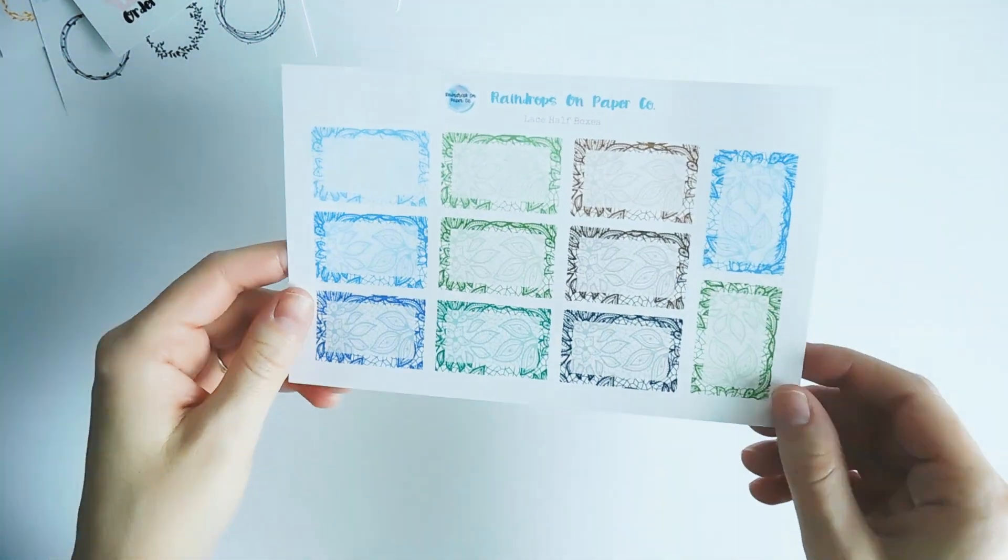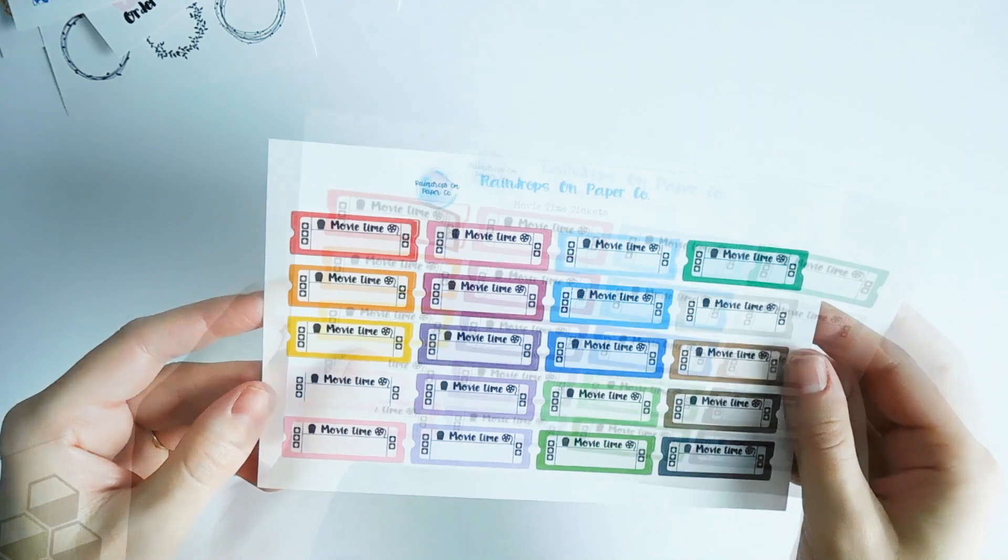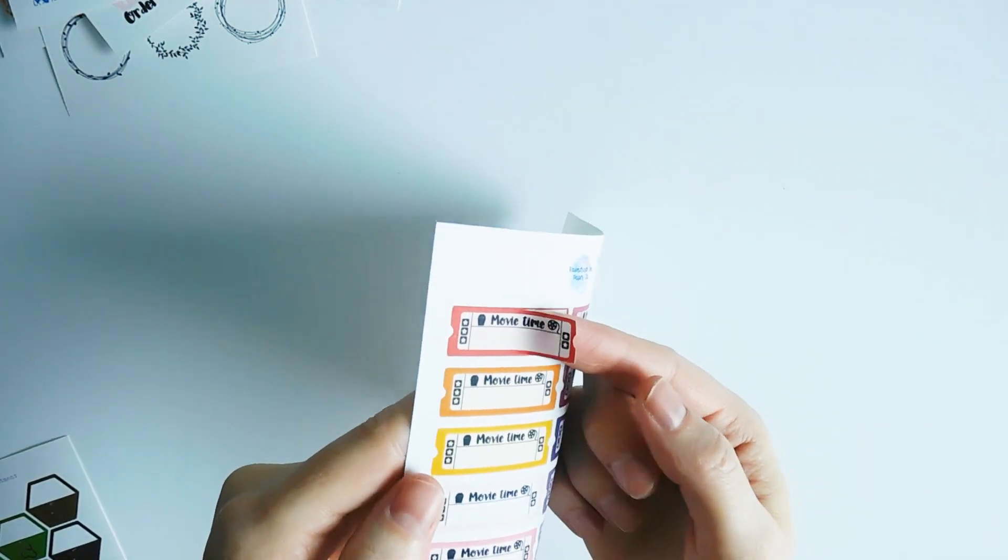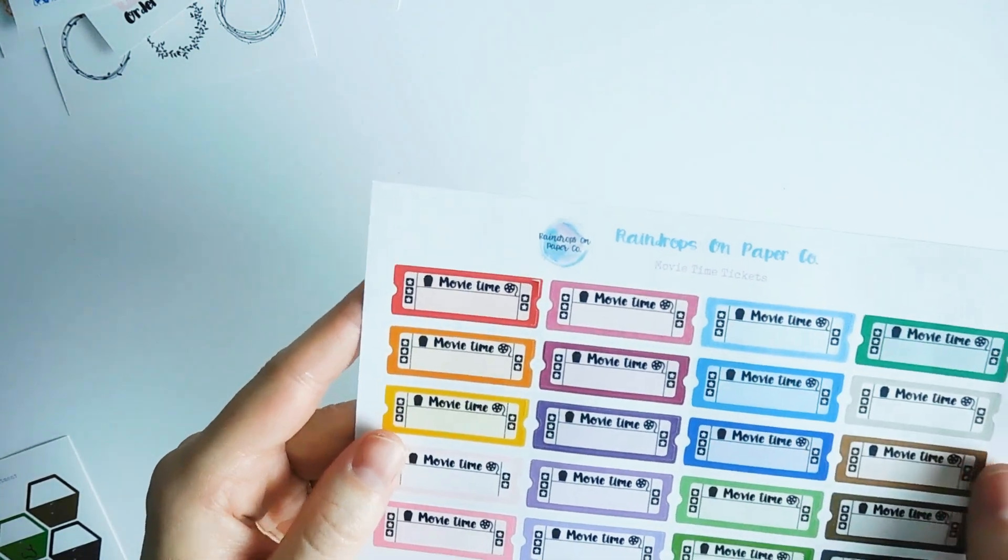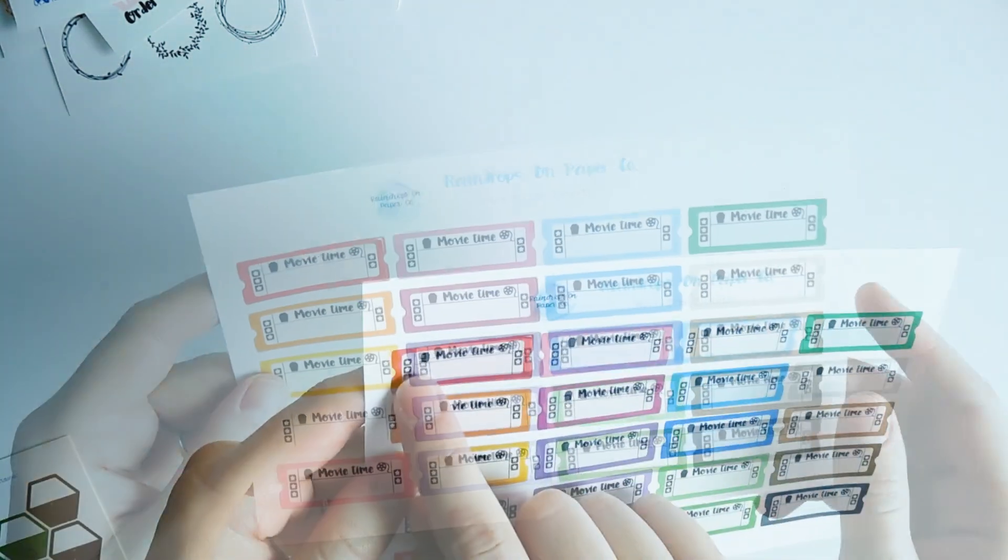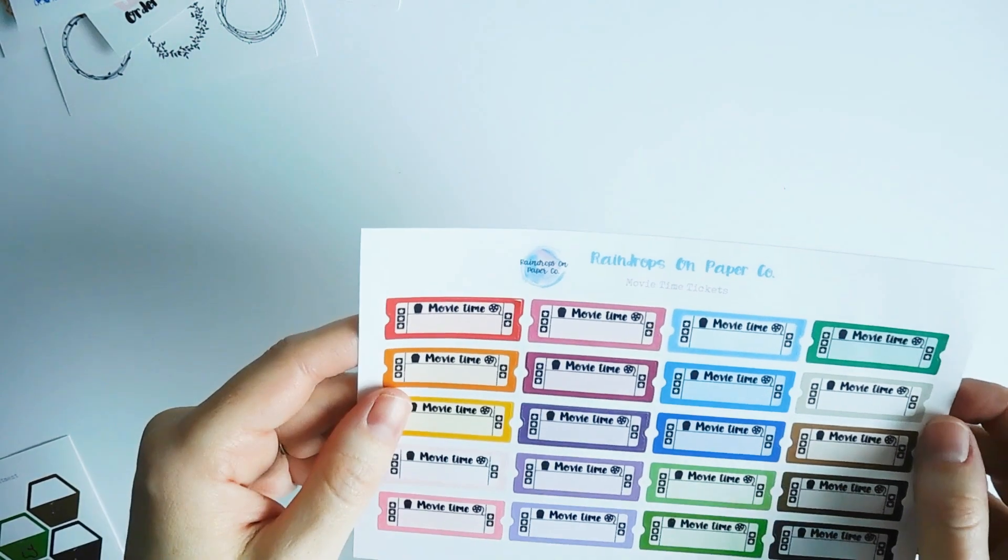I have movie time tickets and my idea was to turn them into an old school movie ticket shape. And then of course you can write the movie and then the time that you need to be there if you're going out.